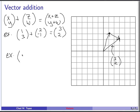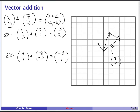Another example: (-1, 1) plus (-2, -2) equals (-3, -1). Visually, starting at the origin, (-1, 1) means 1 left and 1 up. From that point, walk 2 units left and 2 units down. Asking where we end up — counting on the graph — that's the vector (-3, -1).